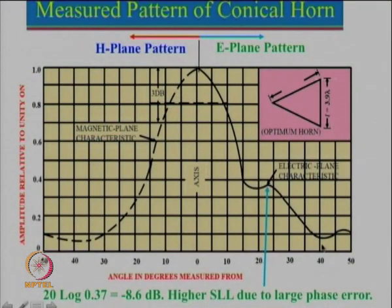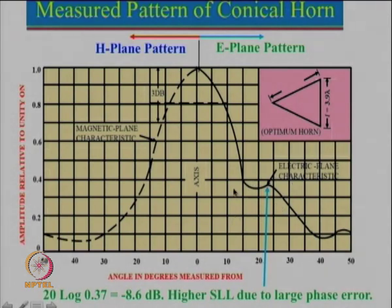We notice that horn antennas have a real problem: the E-plane and H-plane radiation patterns are not symmetrical. There is a major problem in the E-plane because of the high shoulder. Because of this higher shoulder, a lot of power gets radiated in unwanted directions, whereas the H-plane is relatively better.